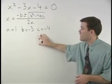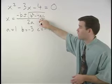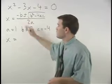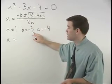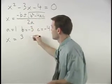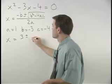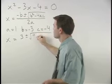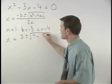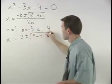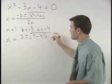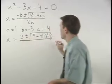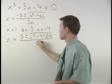Plugging these three values in for a, b, and c into the quadratic formula, we have x equals negative b, which is negative of negative 3, or positive 3, plus or minus the square root of b squared, which is negative 3 squared, or positive 9, minus 4 times a, which is 1, times c, which is negative 4, all over 2a, which is 2 times 1, or 2.